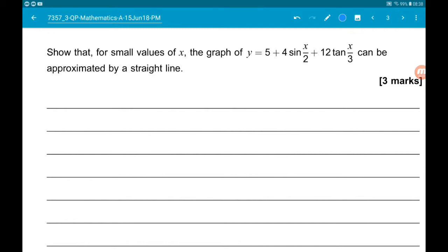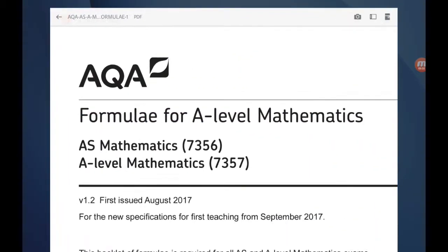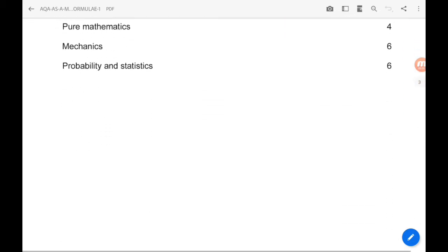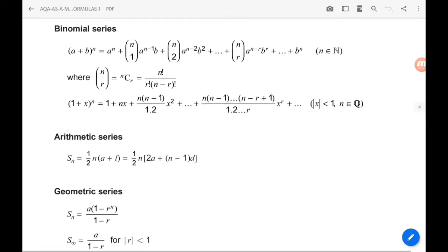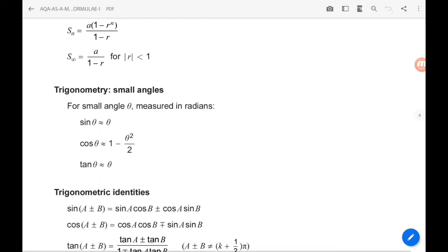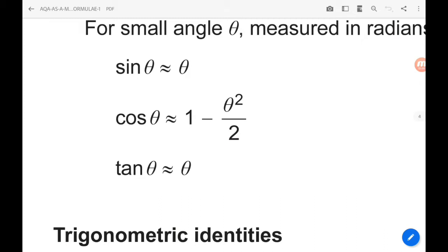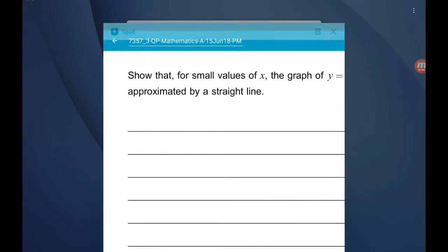We are given the formulas for trigonometry with small values. You can get this down below in the description, so I recommend you get yourselves familiar with what you are given. We're told that sine of theta is approximately theta, and tan of theta is approximately theta.